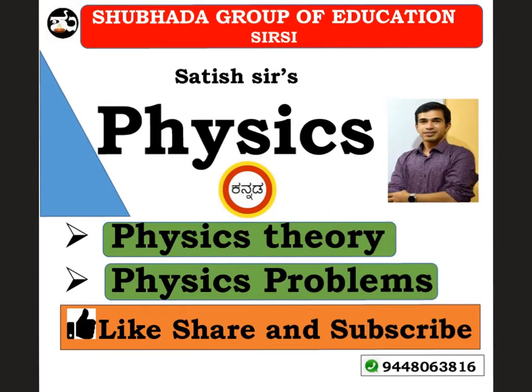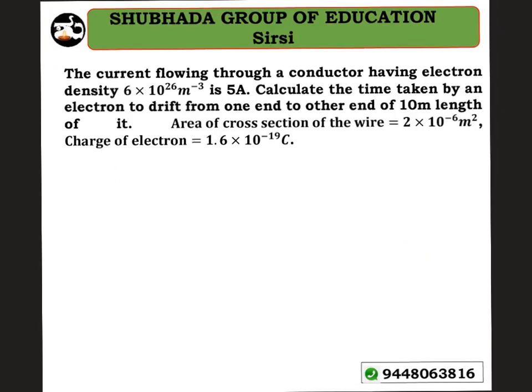Welcome to our channel Shubhada Group of Education. Today we're looking at a physics problem: current flowing through a conductor with electron density 6×10²⁶ per meter cube is 5 ampere. Calculate the time taken by an electron to drift from one end to another end of a 10 meter length conductor, given the area of cross section and electron charge.